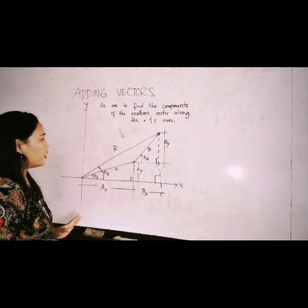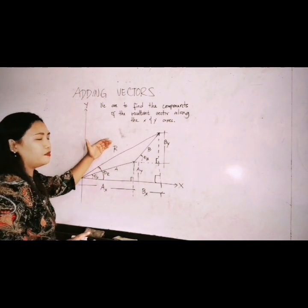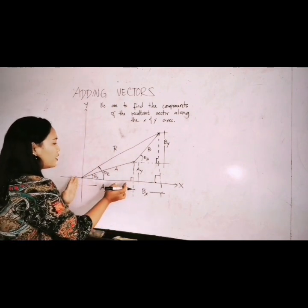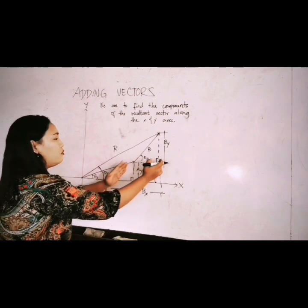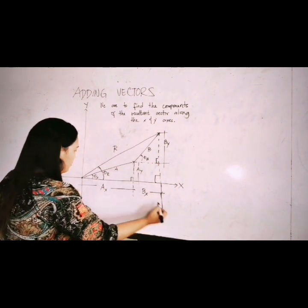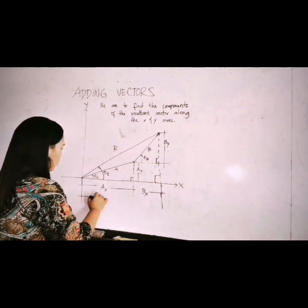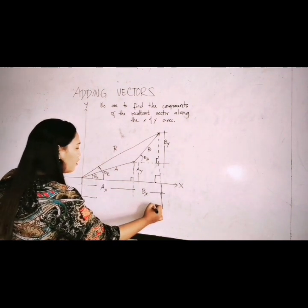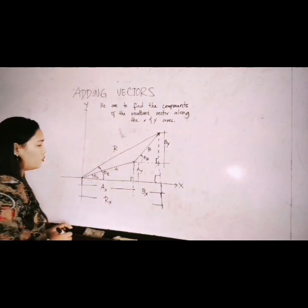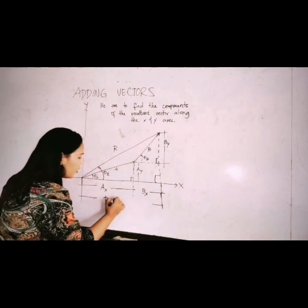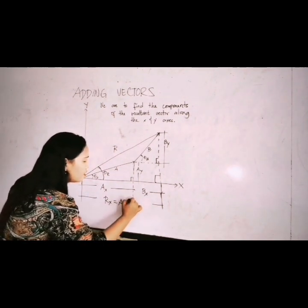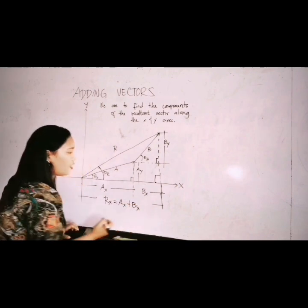So now for the components, how do we find the components of R? It is now easier because we already have the components of vector A and vector B. Which means this side is the component of resultant R along the x-axis. So this is R_x, which is very clear here.